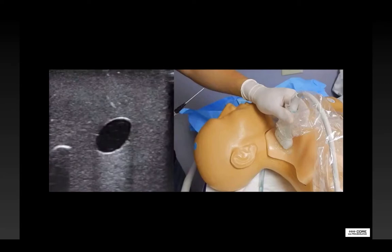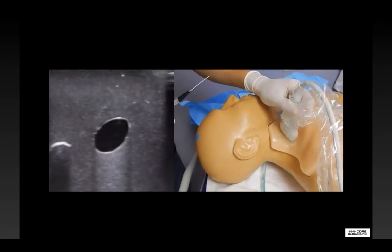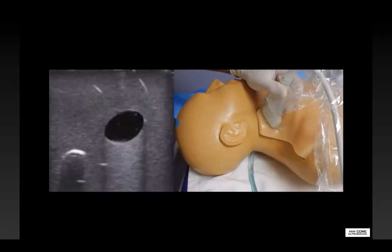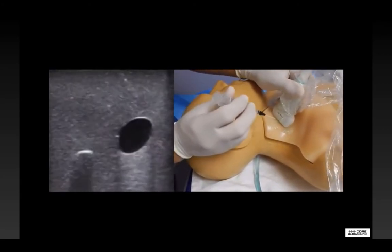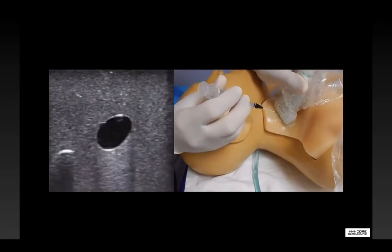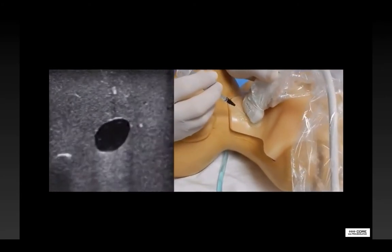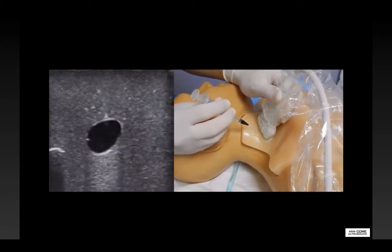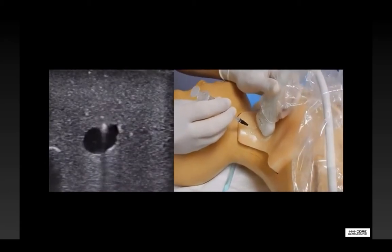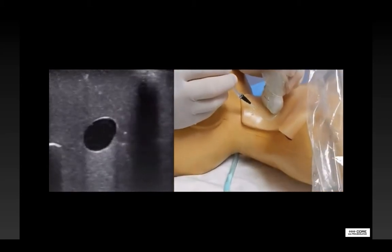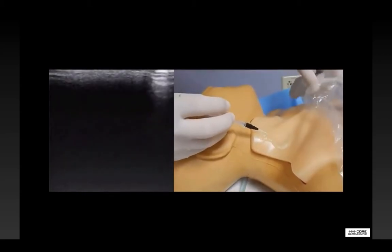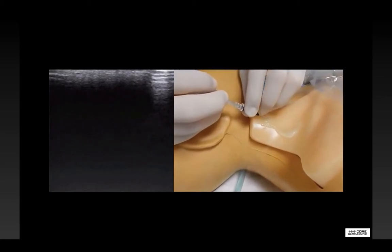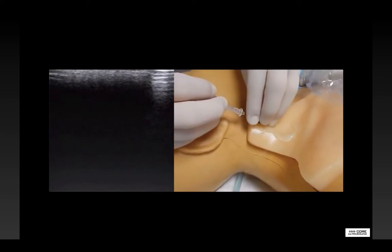Here, we'll watch an example of an out-of-plane approach on the right internal jugular vein. You'll see the provider has a catheter over a needle, and he follows the tip of the needle through the soft tissues down into the vessel lumen. Once in position, he removes the needle and advances the catheter.